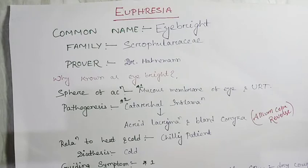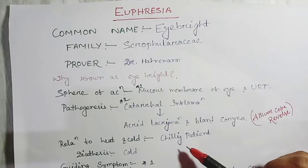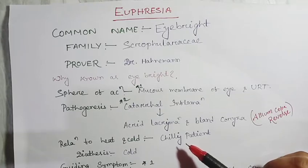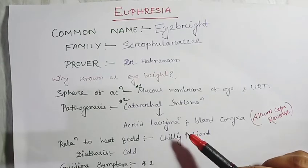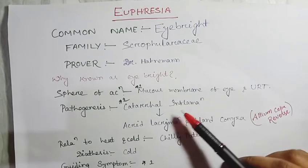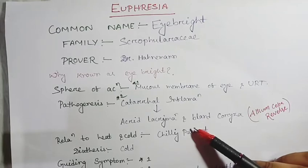Next point: relation to heat and cold. What is the relation to chilly patients? They are chilly patients, meaning aggravation occurs when they come towards the cold. Those symptoms which appear in the cold season lead to catarrhal inflammation, so they are mostly affected by the cold season.